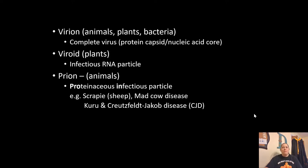A few more terms: a virion, found in animals, plants, and bacteria, is a complete virus containing the protein capsid and nucleic acid core. A viroid infects plants and is simply an infectious RNA particle — it does not have a capsid. Even scarier are prions, which infect animals and are proteinaceous infectious particles — mutated proteins that cause other proteins to mutate as well, like peer pressure. Examples include scrapie in sheep and mad cow disease in cows, and in humans they cause Kuru or Creutzfeldt-Jakob disease (CJD).